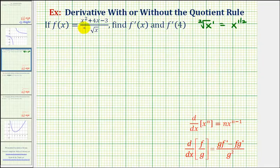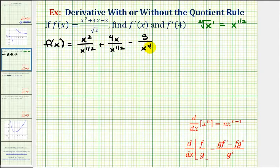Which means we're going to rewrite this and divide each term in the numerator by x to the one-half. So we can write f of x as x to the second divided by x to the one-half plus four x divided by x to the one-half minus three divided by x to the one-half.